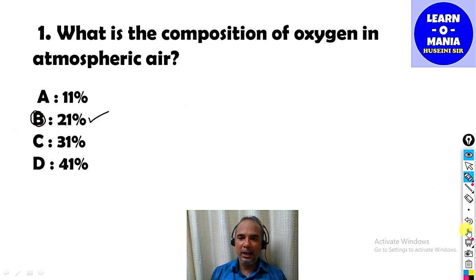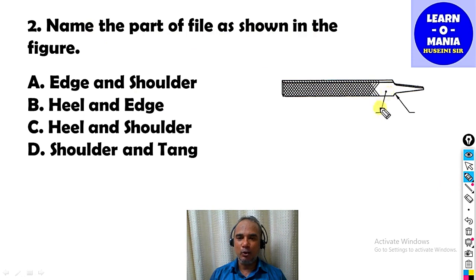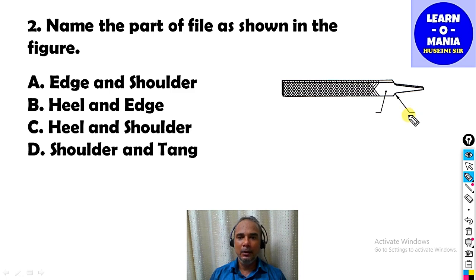The next MCQ is: Name the part of the file as shown in the figure. The answer is option C.